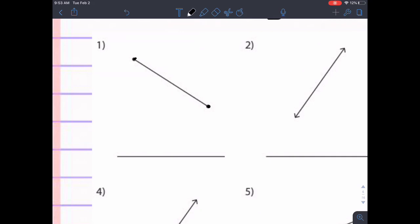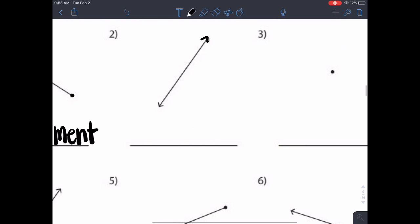I see there's two end points. So, this is a line segment. This one has two arrows going on. So, I know this is just a line.